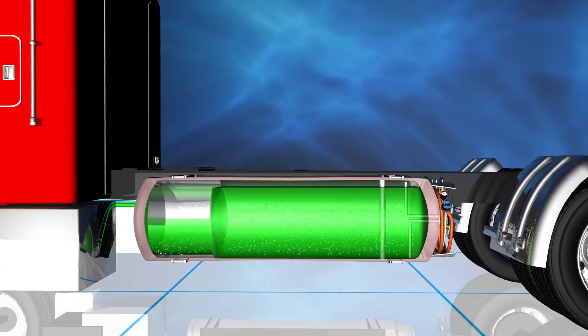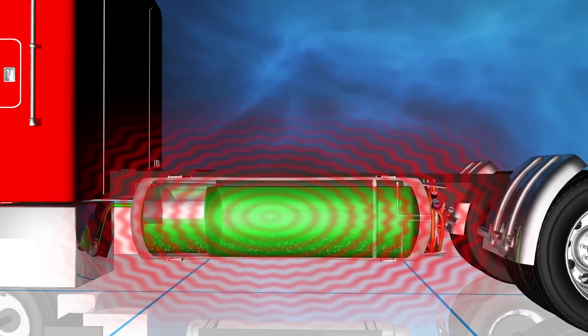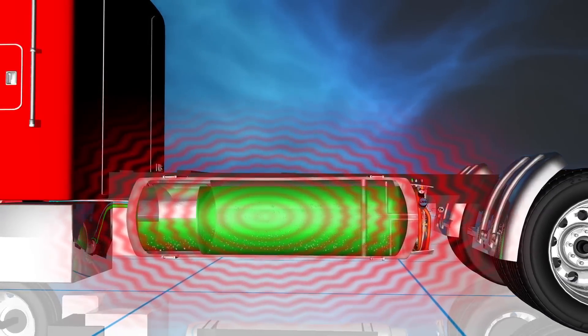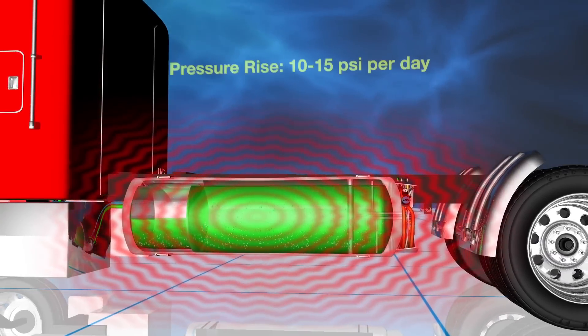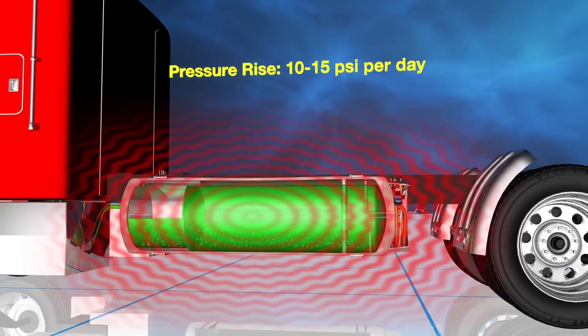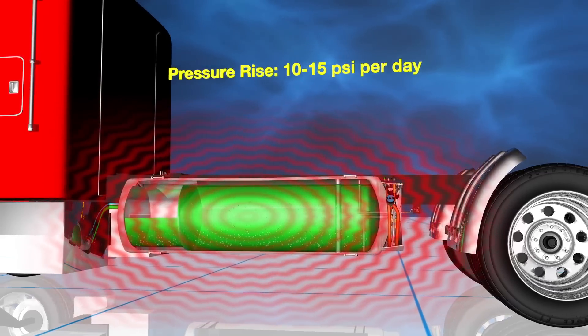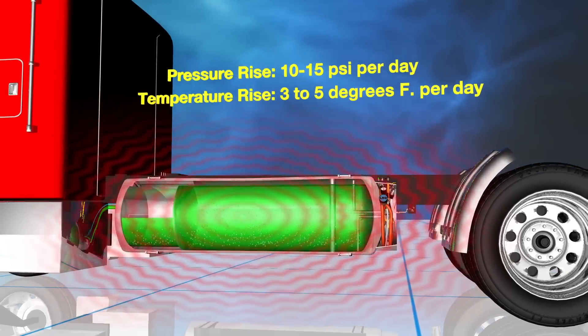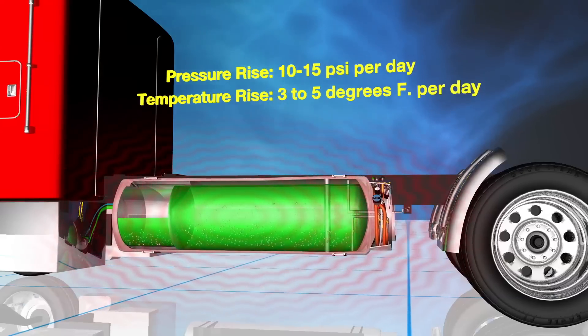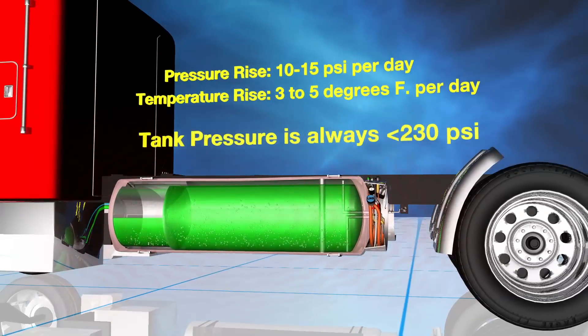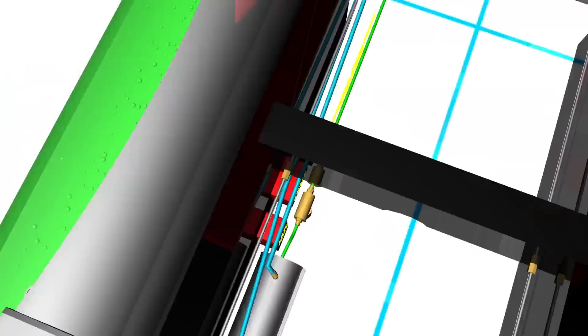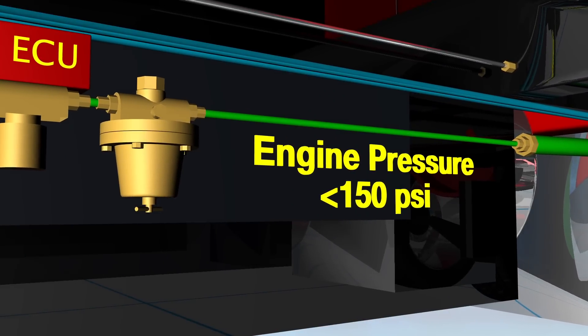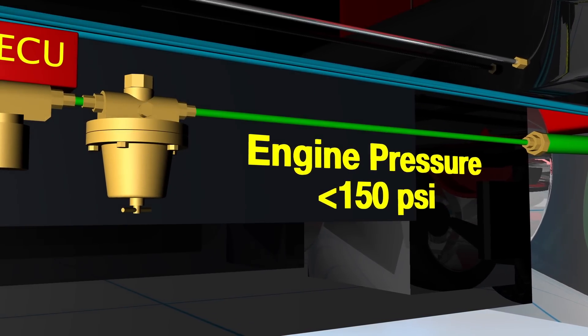Even though the tank is very well insulated, a small amount of heat is always flowing into the tank from the outside. So pressure will gradually rise at a rate of approximately 10 to 15 psi per day, which is equivalent to about 3 to 5 degrees Fahrenheit per day. A series of regulators and valves manage the pressure in the tank so that it never exceeds 230 psi, and the pressure delivered to the engine never exceeds 150 psi.